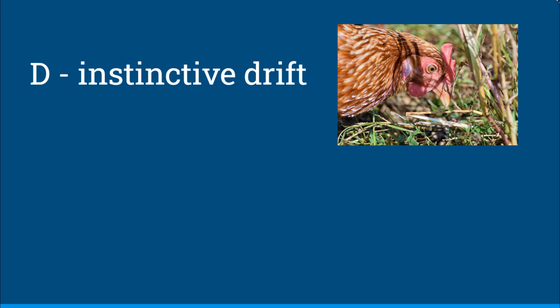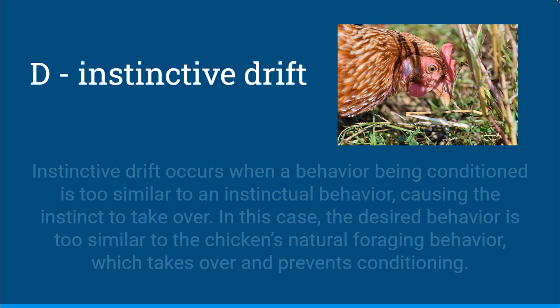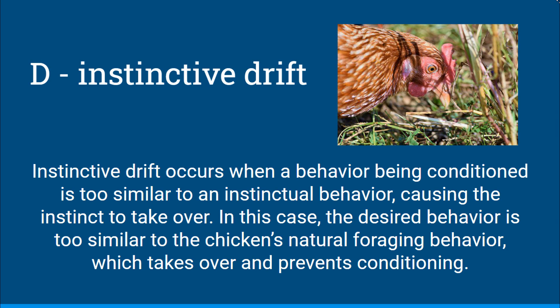And this would be D, instinctive drift. Instinctive drift occurs when a behavior being conditioned is too similar to an instinctual behavior, causing the instinct to take over. In this case, the desired behavior is too similar to the chicken's natural foraging behavior, which takes over and prevents conditioning.